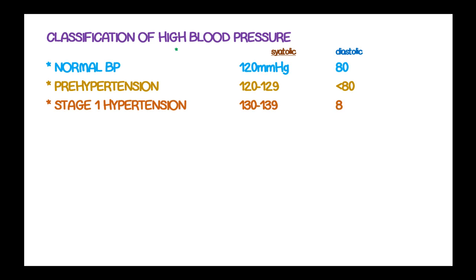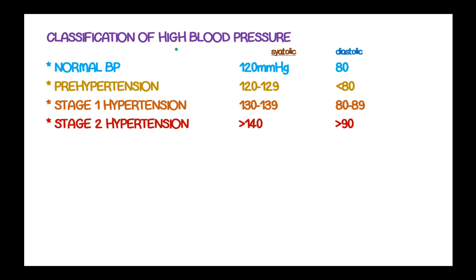Stage 1 hypertension is diagnosed when systolic blood pressure is 130 to 139 and diastolic blood pressure is 80 to 89 mmHg. Stage 2 hypertension is anything above 140 mmHg in systolic blood pressure and a diastolic blood pressure of more than 90.